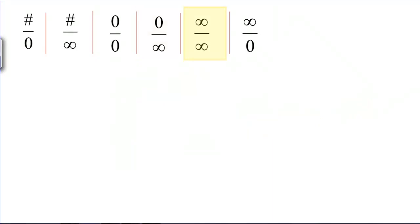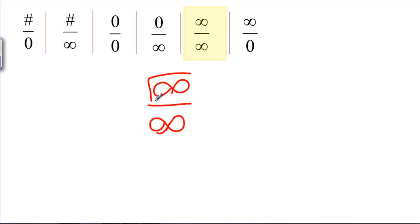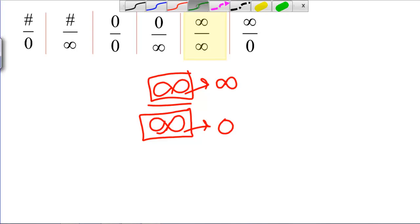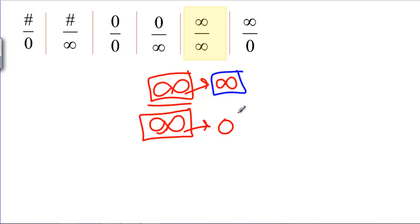What about infinity over infinity? The top — you multiply anything by infinity and you should get infinity. But the bottom — if you divide anything by infinity, you ought to get zero. So again, here we have a conflict: infinity and zero are not the same, so we have an indeterminate form.